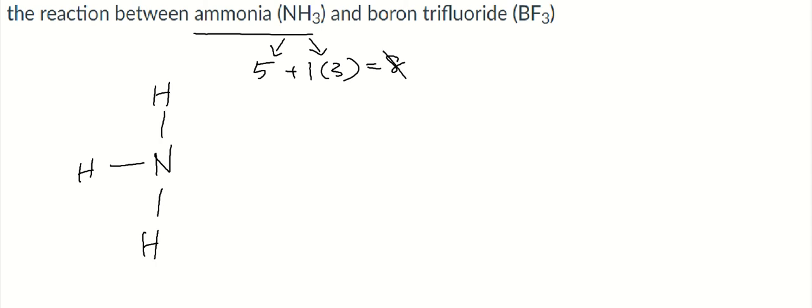We need to connect them with bonding pairs. That's going to eat up two, four, six of our electrons, so we have two left. Those two that are left are going to go on the central nitrogen there as lone pairs. So now we've used all our electrons for ammonia.